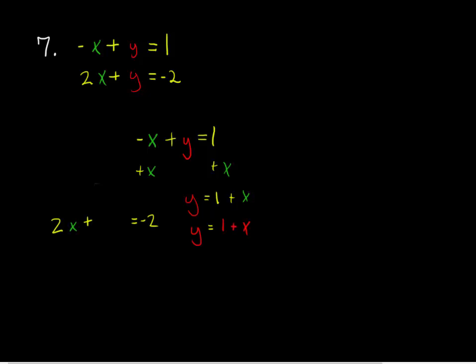Instead of writing 2x plus y equals negative 2, we write 2x plus 1 plus x equals negative 2. Combine like terms, and solve. Subtracting 1 from each side shows that 3x is equal to negative 3. So x must be equal to negative 1.